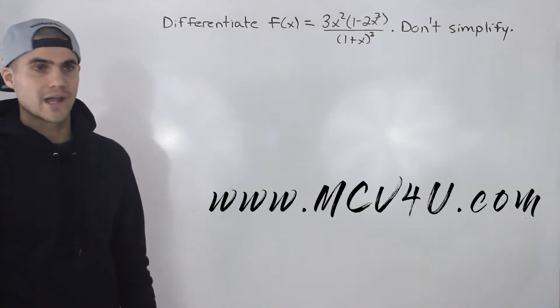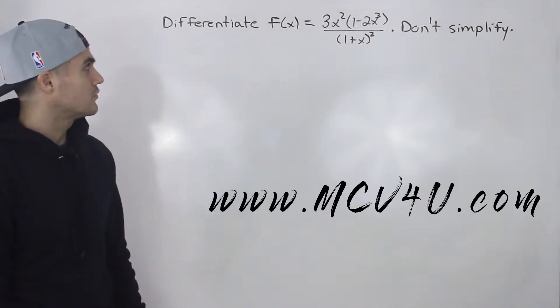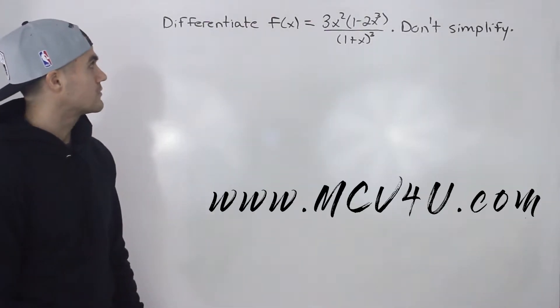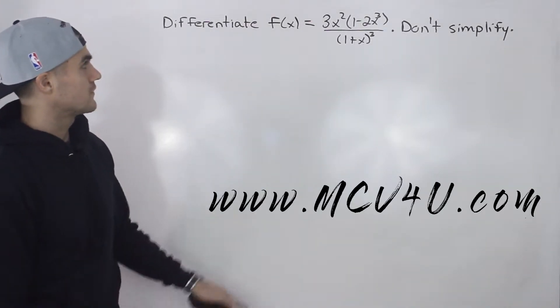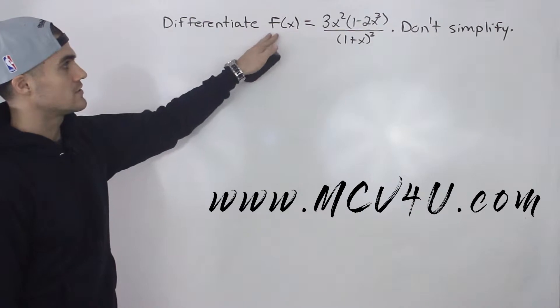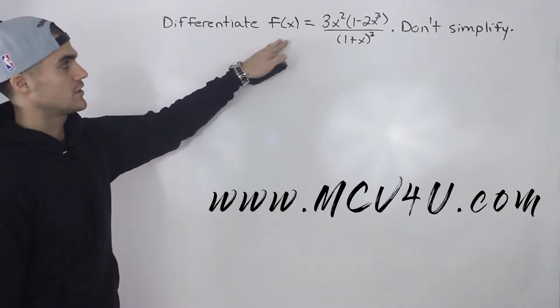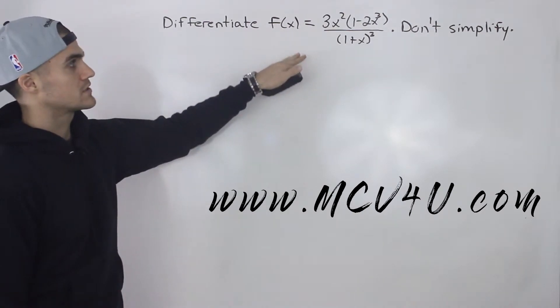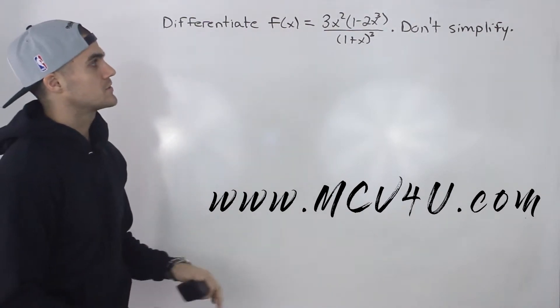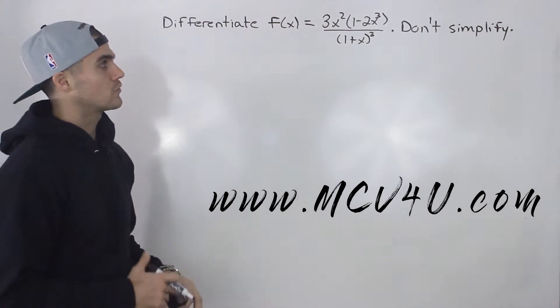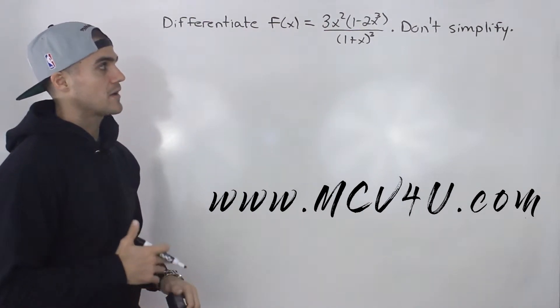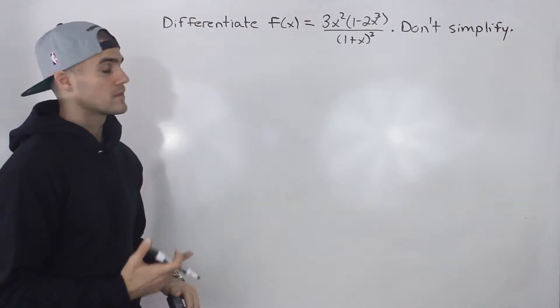What's going on everybody? Welcome back. Patrick here. Moving on with derivatives, we have to differentiate this big function: 3x squared times 1 minus 2x cubed, all over 1 plus x to the power of 3.